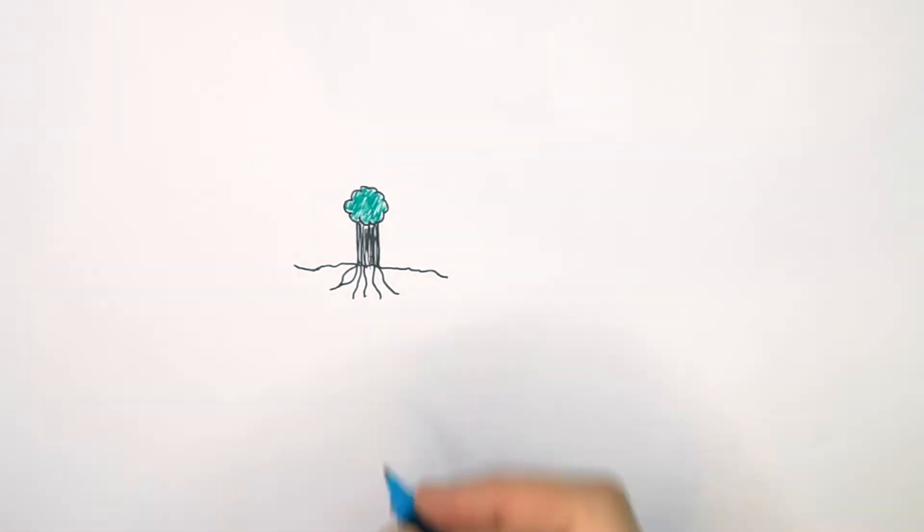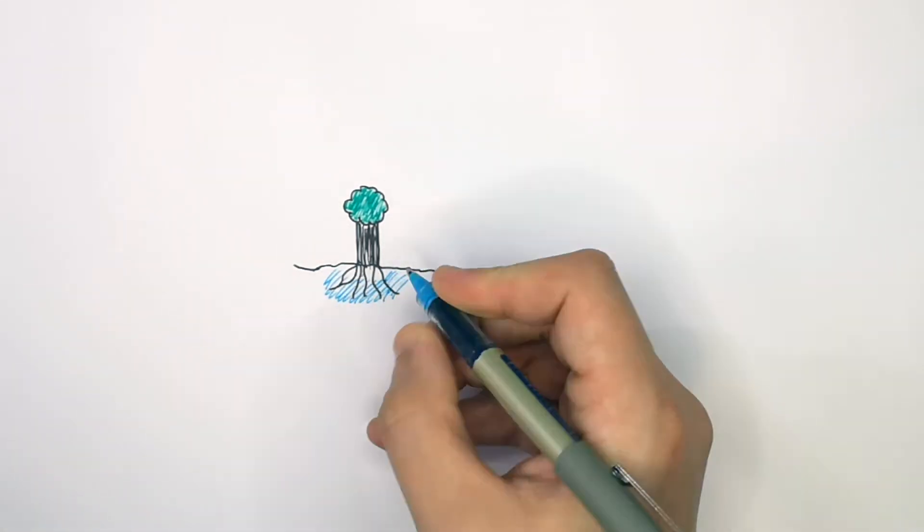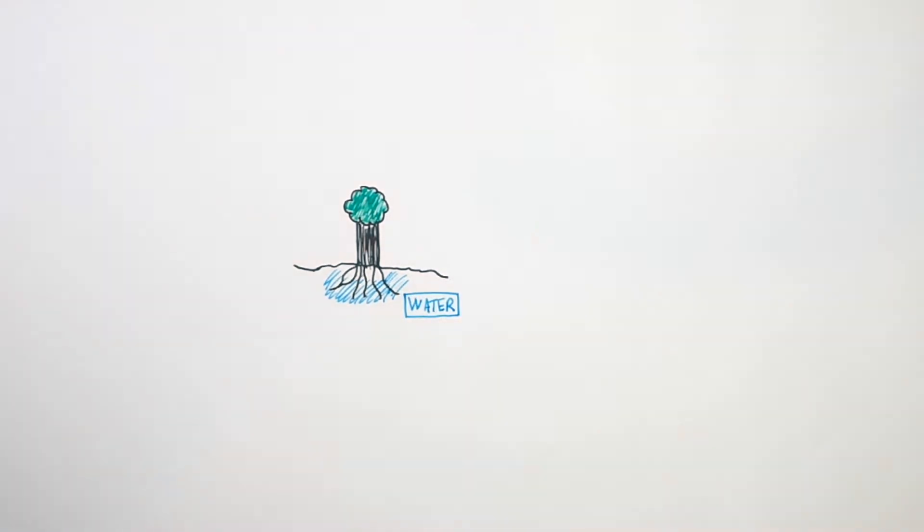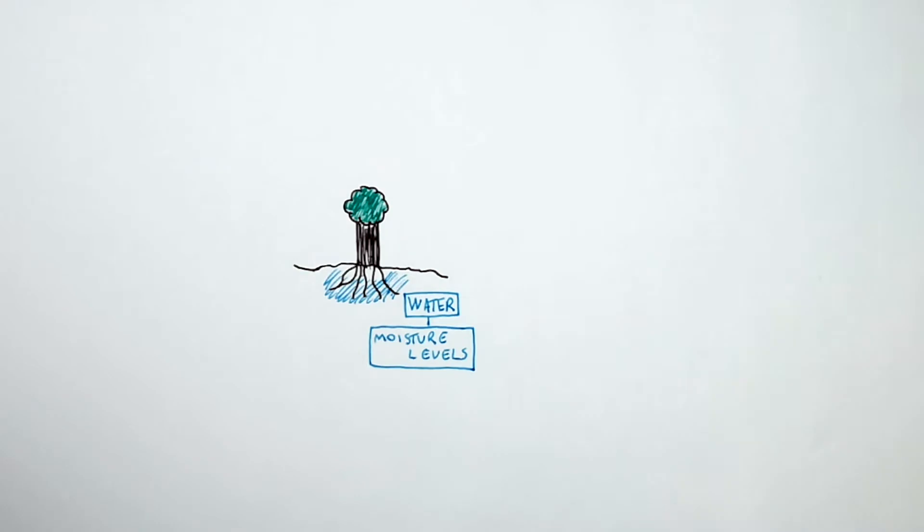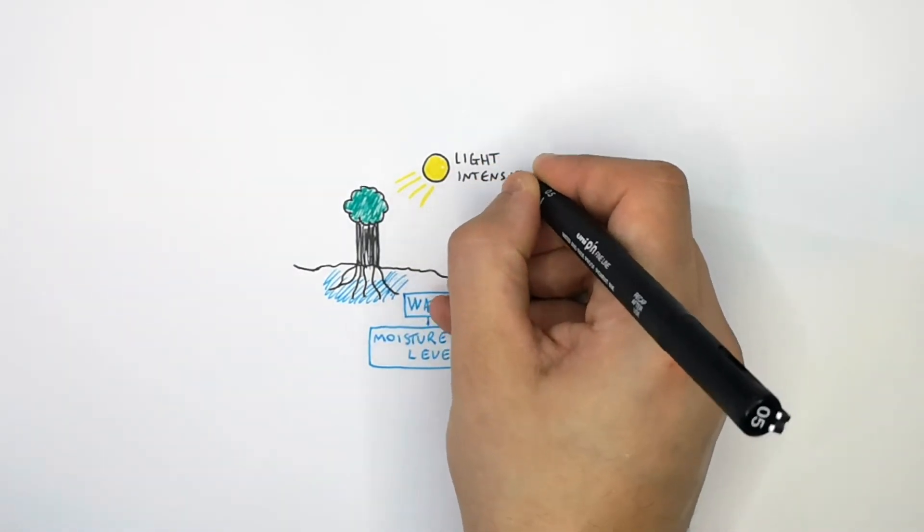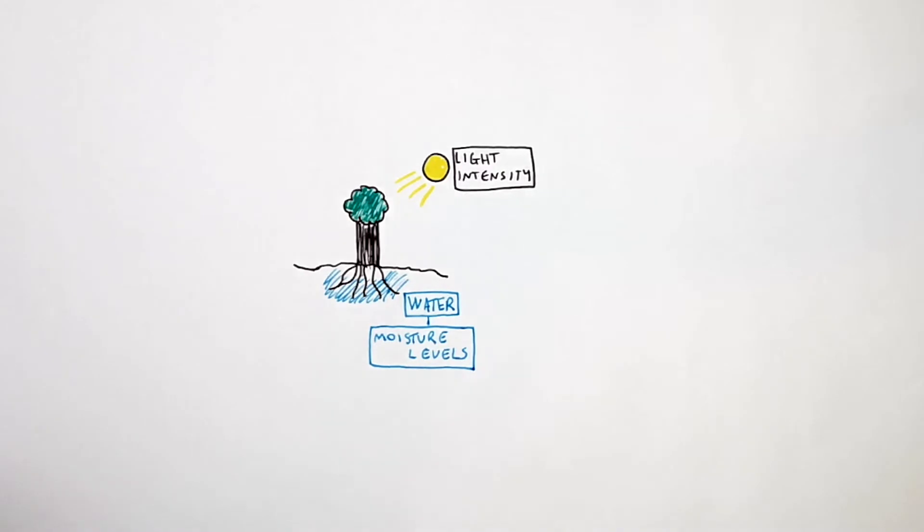This is a plant and the first abiotic factor is going to be water. Water affects moisture levels in the soil. Secondly, light intensity. Light intensity is another abiotic factor that can affect organisms in an ecosystem.